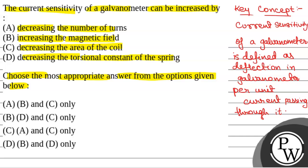This is the current sensitivity of a galvanometer. The formula for current in a galvanometer is: I = (K / NAB) × θ, where K is the torsional constant of the spring, N is the number of turns in the galvanometer, A is the area of the coil, B is the magnetic field, and θ is the deflection.